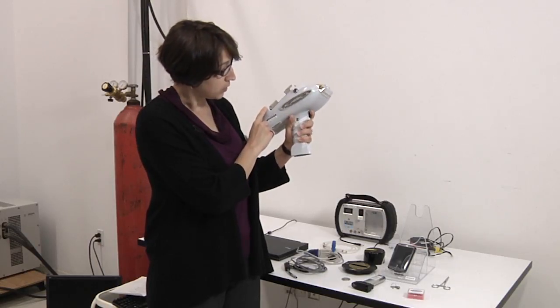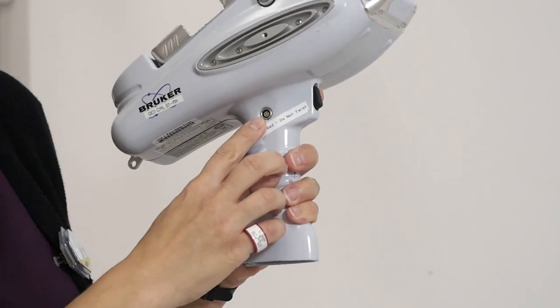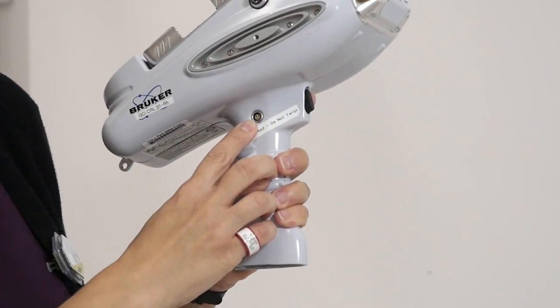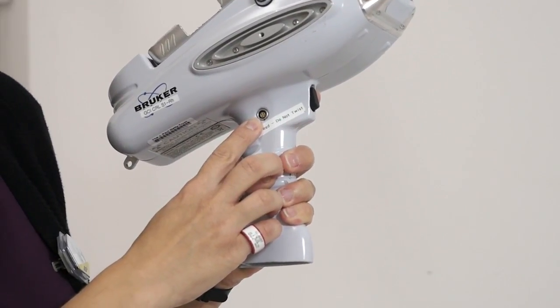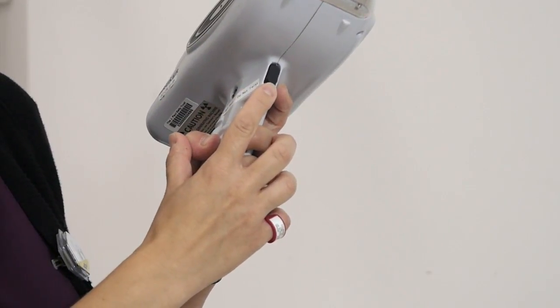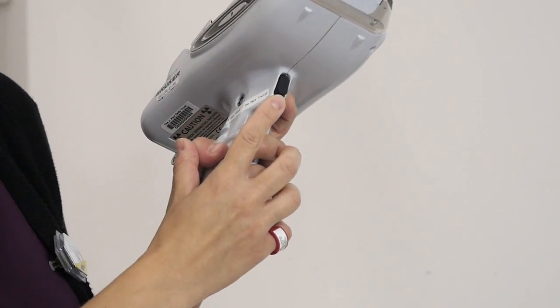On the side of the unit you can see another port. This is where we insert the cable that allows you to remotely turn on or off the unit. There's also an on and off switch which is often referred to as a trigger.